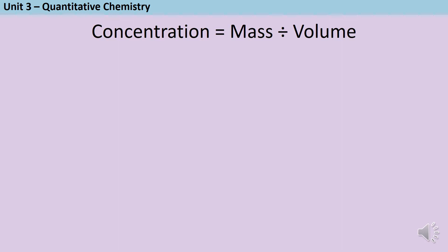Often we want a number — we need a quantitative answer — so now we need a calculation. We can calculate concentration by taking the mass of the solute and dividing it by the volume of the solvent. The units for concentration are grams per decimetre cubed. You might not already be familiar with decimetres cubed as a unit of volume, but you've certainly heard of metres cubed and centimetres cubed. If you know that the slash or per sign is really a divide sign, then the units tell you what calculation you need to do.